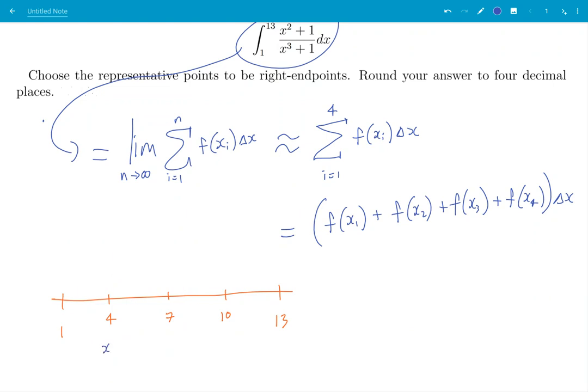So this one will be x_1, 7 will be x_2, 10 is x_3, and 13 is x_4.